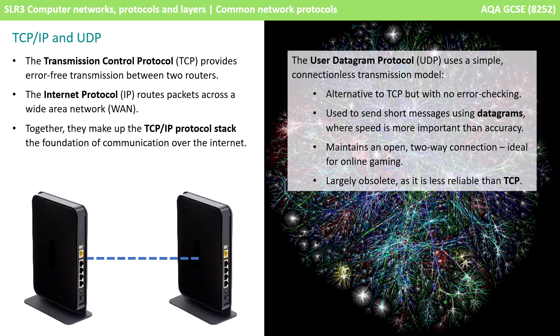We looked at TCP/IP earlier. UDP is similar — it stands for User Datagram Protocol. It uses a simple connectionless transmission model and is an alternative to TCP, but it has no error checking. It's used to send short messages using datagrams where speed is more important than accuracy. It maintains an open two-way connection, ideal for online gaming. It's now largely obsolete as it's less reliable than TCP.